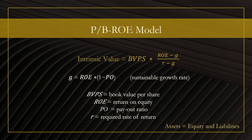PO stands for payout ratio and represents the proportion of income that the company pays out to its shareholders. For example, if a company generates $100,000 in profits in a year and pays out $60,000 in dividends to shareholders, then the payout ratio is 60%.